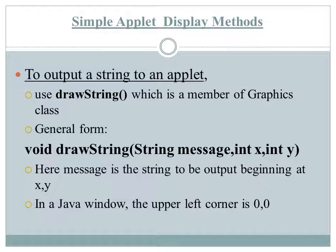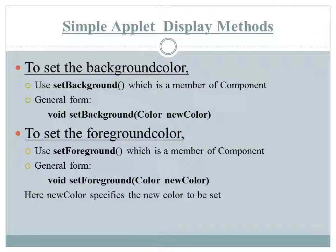Now we will see some important applet display methods. The first is drawString, whose arguments are the message to be displayed and the x, y coordinates of the position. In Java, the upper-left corner of the window is coordinate (0, 0). Another important display method is setBackground and setForeground — we can set the background and foreground color of an applet window by calling these methods and passing the color value as the argument.